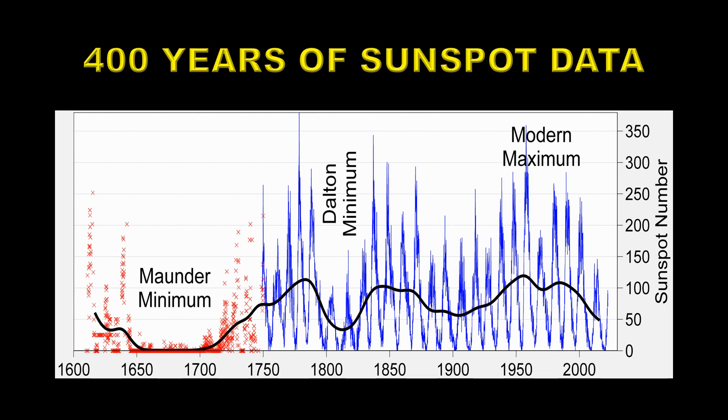We have the Maunder Minimum where there were nearly no sunspots for 70 years, the Dalton Minimum where there are a couple of very low solar cycles, and several periods of maxima in the late 18th century, mid-19th century, and mid-20th century. Looking at that past pattern, you'd think that the solar cycle is fairly easy to predict. We have 400 years worth of data, and you might think the predictions would be well-established by now — but they're not. They're hard to predict.